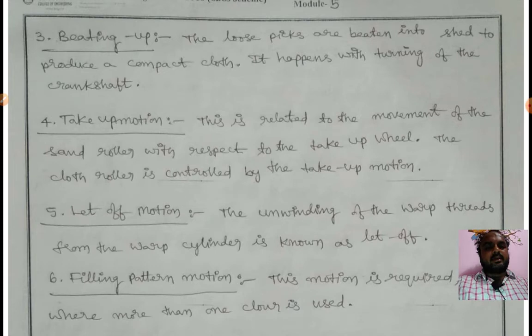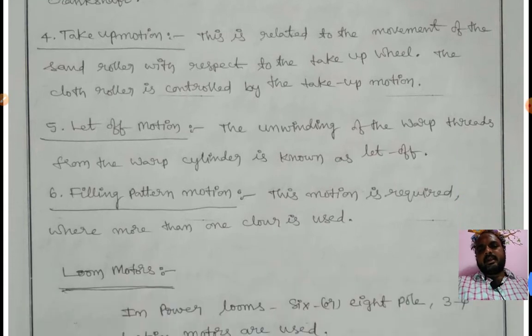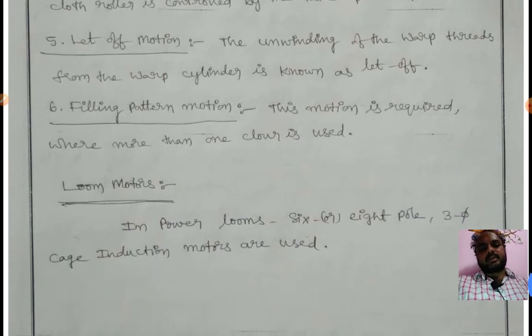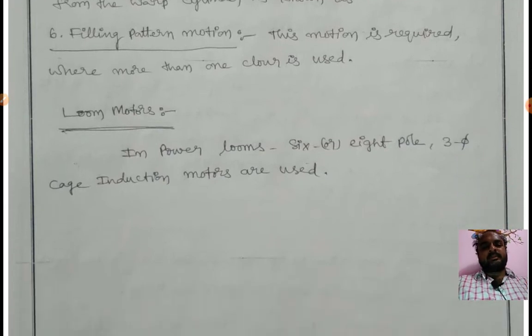Taking up motion: related to movement of the sand roll with respect to the take-up wheel. The cloth roller is controlled by the take-up motion. Let-off motion: the unwinding of the warp threads from the warp cylinder. Filling pattern motion: required where more than one color is used.